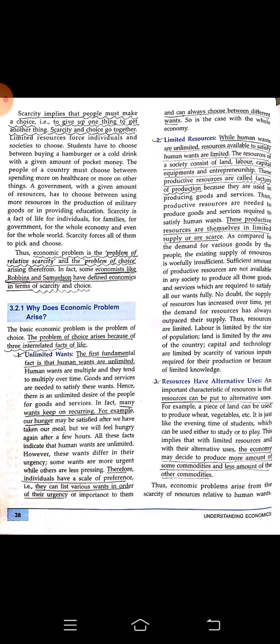The next reason is limited resources. While human wants are unlimited, the resources available to satisfy those wants are limited. The resources of a society consist of land, labor, capital, equipment, and entrepreneurship — these productive resources are called factors of production. These productive resources are themselves in limited supply or are scarce. Additionally, resources have alternative uses — whatever resources we have, natural or otherwise, can be put to alternative uses. Since resources are scarce, limited, and have alternative uses, we need to be very wise in how we use them.